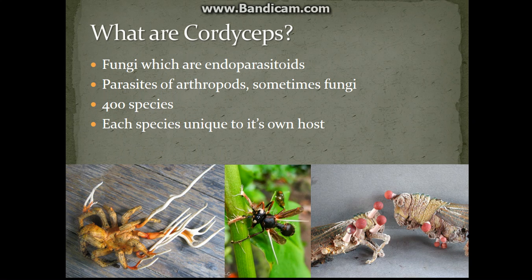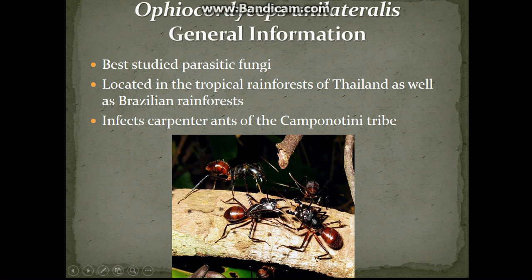What's specifically interesting about the cordyceps is that there are thousands of species of them, and for each individual species they have a specific insect which they are parasitoids of. So for each specific cordyceps species there is a specific insect species which they feed on. As you can see in the pictures, there's a spider, a wasp, and a grasshopper all being infected by a different fungus, where you can see the fungus actually protruding from their exoskeleton.